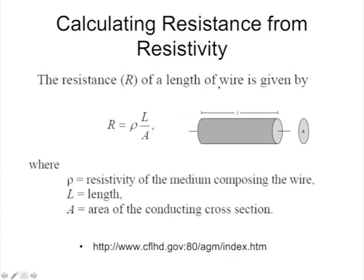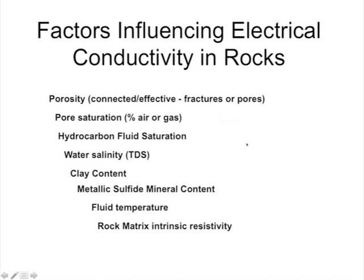How do we calculate resistance from resistivity? The resistance R of a length of wire is given by the resistivity rho of that wire material times its length L, divided by its cross-sectional area A. That wire material has a resistivity rho, and once you define the geometry — length and cross-section — you get the resistance in ohms instead of the resistivity in ohm-meters.